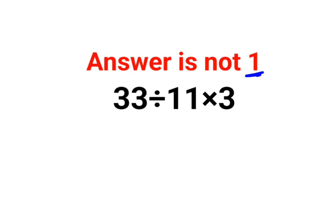There are a lot of people who thought that the answer is 1 because this looks so easy, right? 33 will keep the division as it is, and first we will do 11 multiplied by 3, that gets you 33, and 33 divided by 33 gets you the answer as 1.